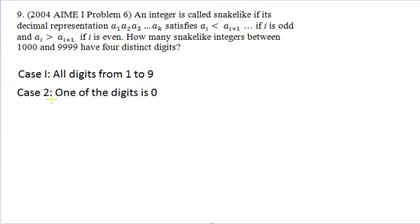So what we decided to do was split into two cases. In the first case, all the digits would be from 1 to 9, and in the second case we're allowed to have a 0, like 6801.